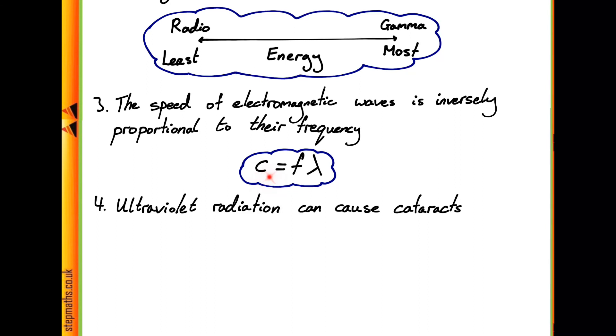So from this equation, straight away we can see that the speed of waves, c, is proportional to both their frequency and their wavelength. And so actually this statement is going to be false too. The speed of electromagnetic waves is just proportional to their frequency, with no inversely at all.